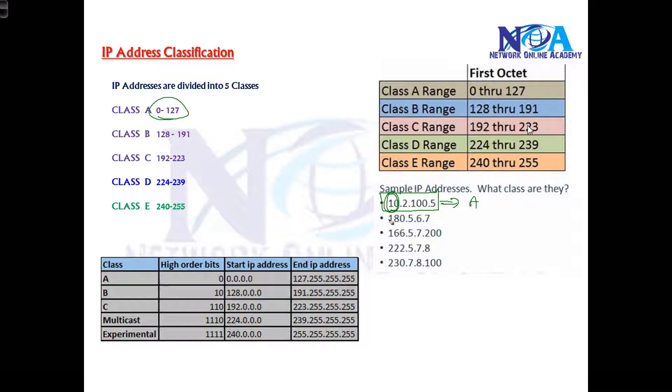Likewise, if I go with the second example, I just see only the first portion. 180 comes in the range of B class, so this is your B class address. And I go with the third example, 166, so 166 comes in the range of B, so this is going to be B class. And the fourth one, 222, so 222 comes in the range of this C class, so I'll say this is my C class example.